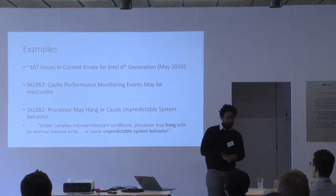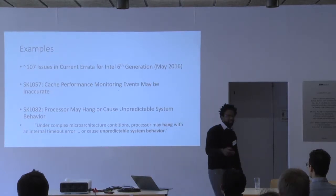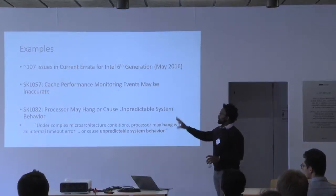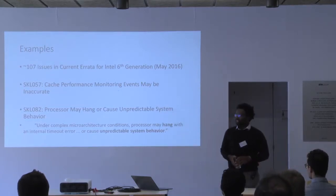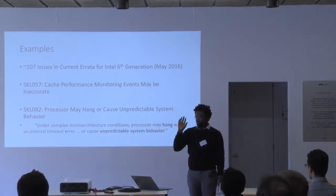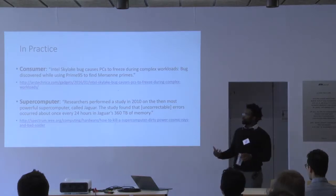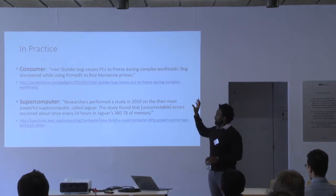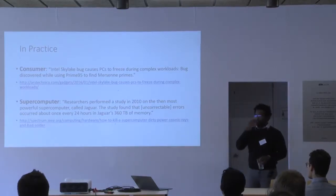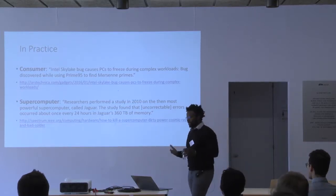Many of you in this audience have probably seen some of this — you can go to the Intel website and pull down the errata sheet for your given processor, and it's going to describe many of the issues you'll have in the CPU actually sitting in your laptop or desktop. Some of these are relatively benign, like cache monitoring events. But other things are much less benign, where the processor may hang or just do arbitrarily incorrect things. This is starting to show up — if you're building a modern supercomputer or data center, you're very concerned because it's very difficult to run large-scale computations without running into faults at some point.